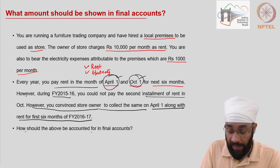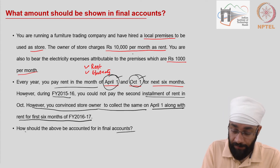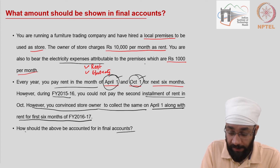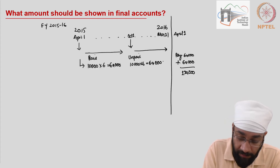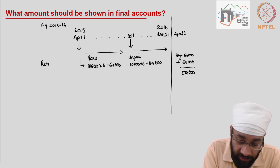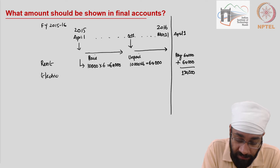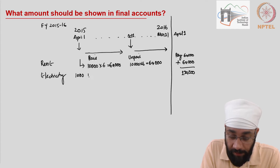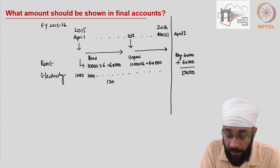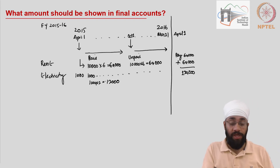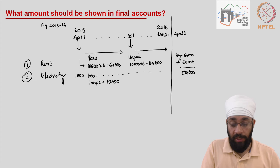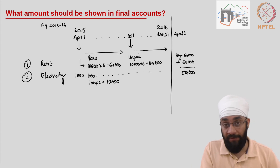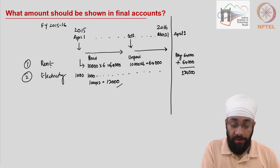How should the above be accounted for in the final accounts? The other expense is electricity, which is 1,000 per month, and you pay this every month — not six-monthly. So in total you are paying 12,000 for electricity. So there are two expenses: rent and electricity. Electricity is being paid every month, 12,000 for the year, and the rent is paid six-monthly, and now you've not paid it.